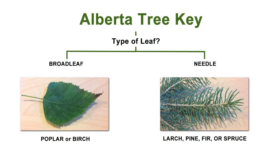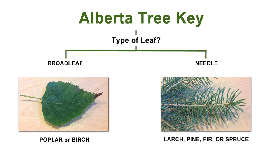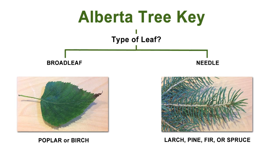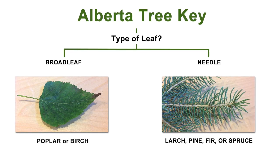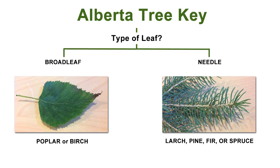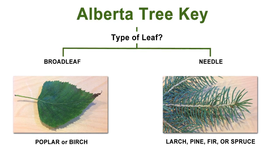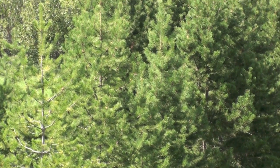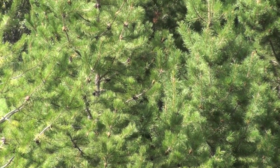The way we use a key is very simple. The key presents an either-or question and all we have to do is choose. In this case we are choosing between leaf types — either broad leaf or needle type leaves. By doing so we narrow down the type of Alberta tree. If it's broad leaf it's a poplar or birch tree. If it's a needle type leaf, the tree must be larch, pine, fir, or spruce.